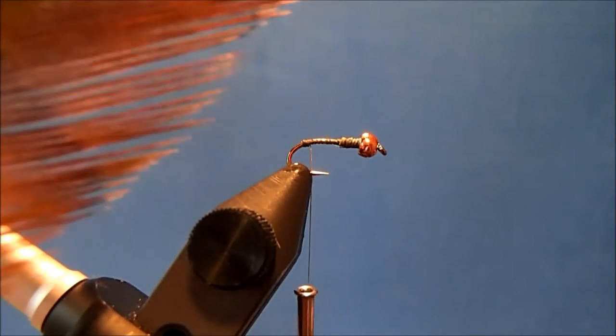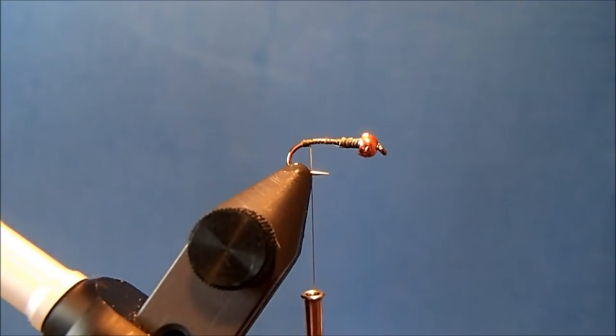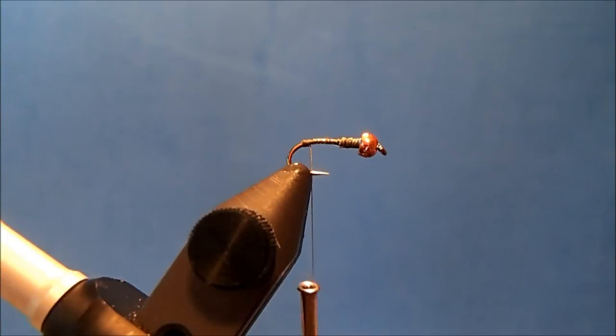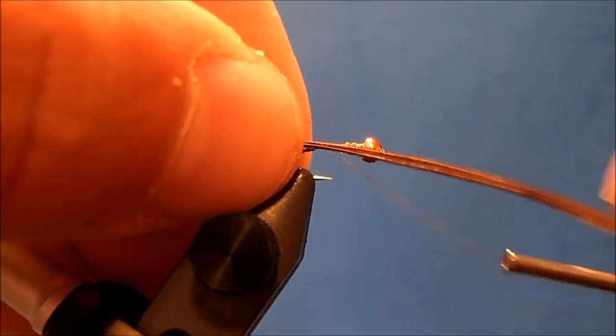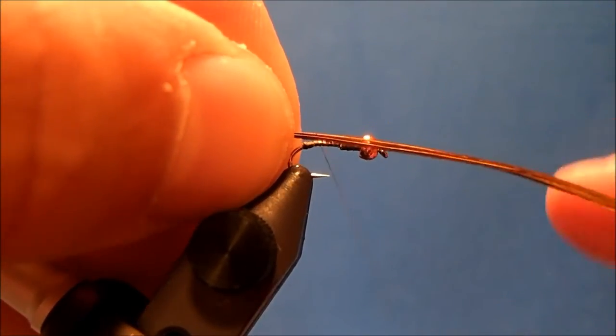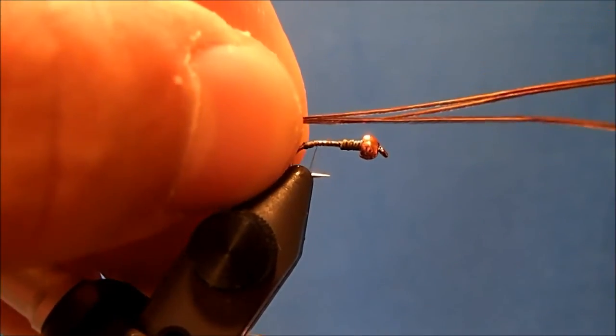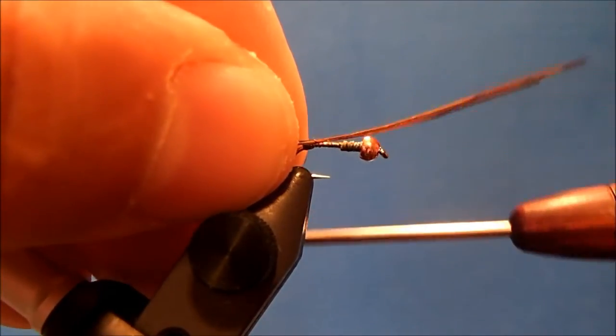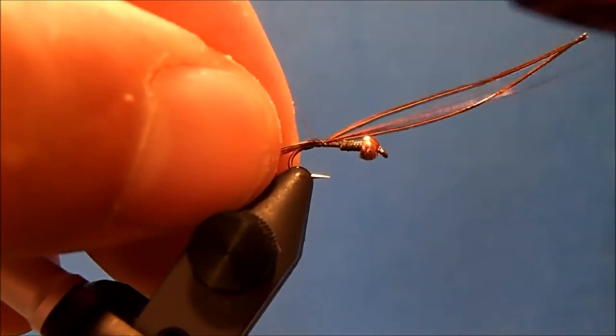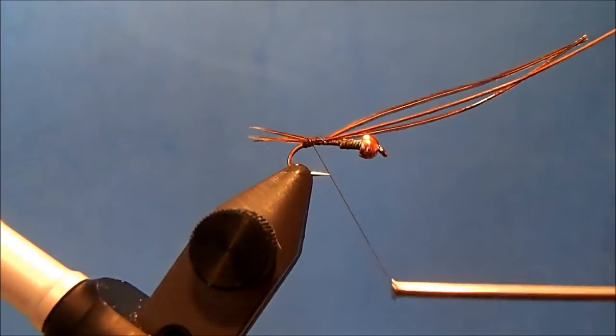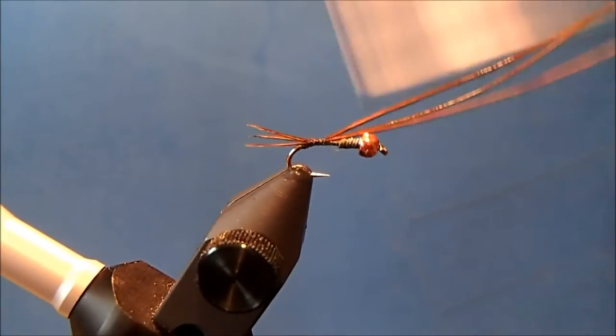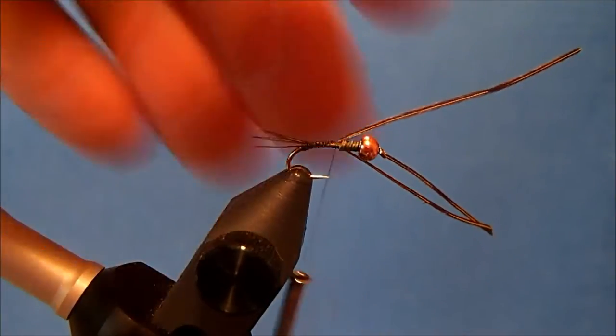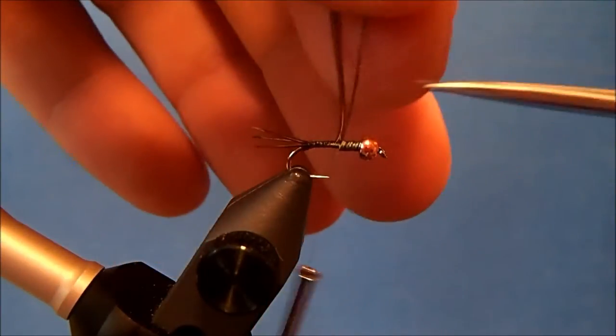The tail I'm going to use is pheasant tail dyed olive. I've taken off three fibers and I'll tie these in on the side. When I make my wraps, I'm just going to bring them up and around, tying them over that bump as I go. You can see how that spreads those out. I'll take some wraps back to secure the butt sections and trim the excess.